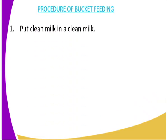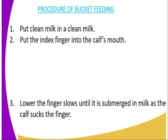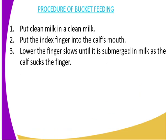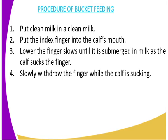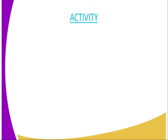What are the procedures of bucket feeding? Number one, put clean milk into a clean bucket. Number two, put the index finger into the calf's mouth. Number three, lower the finger slowly until it is submerged into the milk as the calf sucks the finger. Number four, slowly withdraw the finger while the calf is sucking. Number five, repeat the procedure until the calf learns to take milk from the bucket.